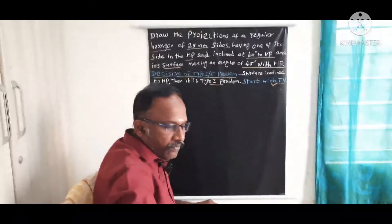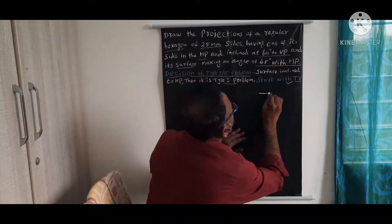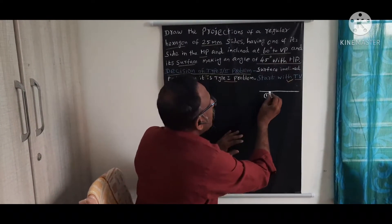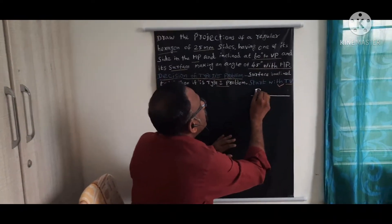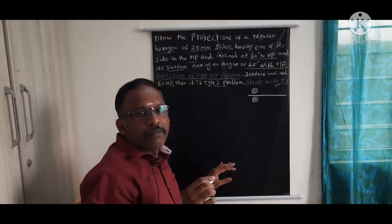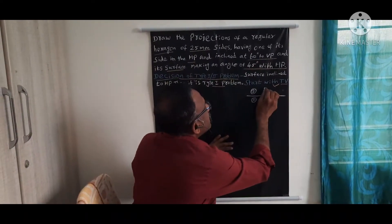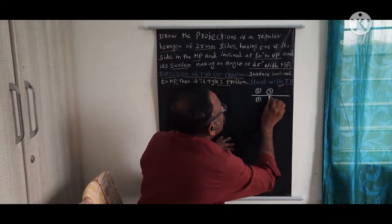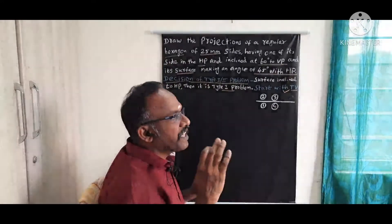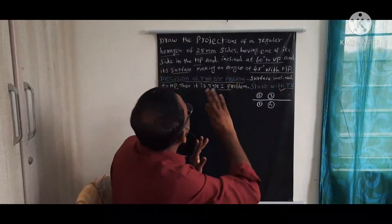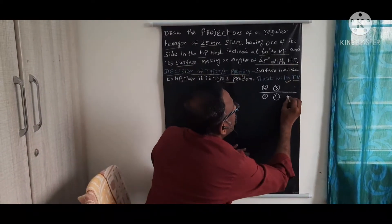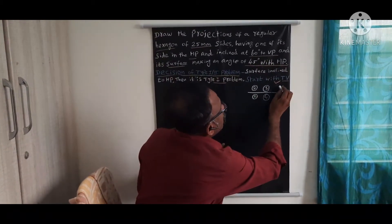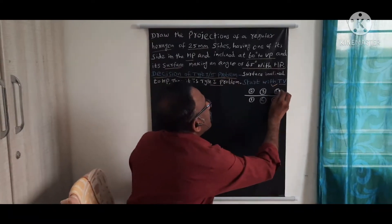I will roughly draw the steps involved in this particular problem. First, you start with the preliminary top view. Then you draw the preliminary front view for the initial position. Then Step 3 is the second front view. Then you need to draw the second top view using the surface inclination. By using side inclination you draw Step 5 as the final top view. Then, based on Steps 3 and 5, you complete Step 6, which is the final front view.